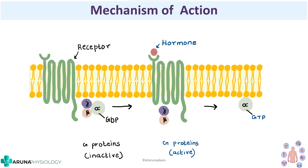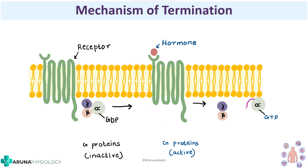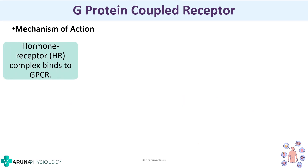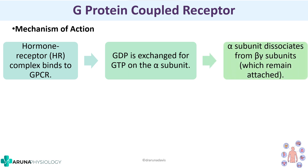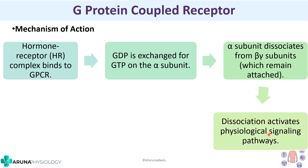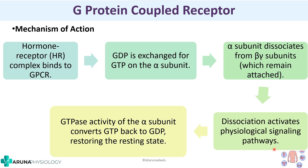This is how a G-protein coupled receptor works. To terminate its action, the alpha subunit has intrinsic GTPase activity, which means it can convert GTP back to GDP, returning it to an inactive state. In summary: the hormone-receptor complex binds to the GPCR, GDP is exchanged for GTP on the alpha subunit, the alpha subunit dissociates from the beta and gamma subunits activating physiological signaling pathways, and then GTPase activity converts GTP back to GDP restoring the resting state.